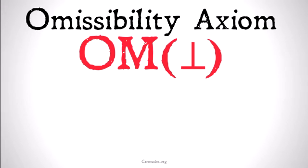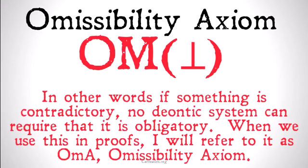We can also state this as: it's omissible that any contradiction, because not obligatory is just the same as omissible. In other words, if something is contradictory, no deontic system can require that it is obligatory. When we use this in proofs, I'm going to refer to this as OMA — the omissibility axiom.